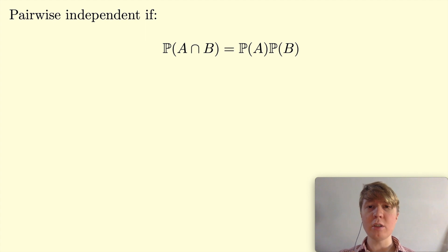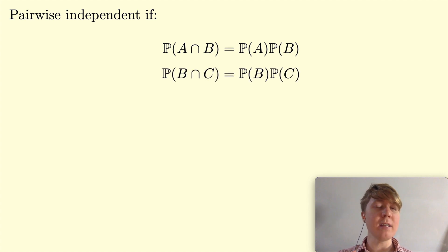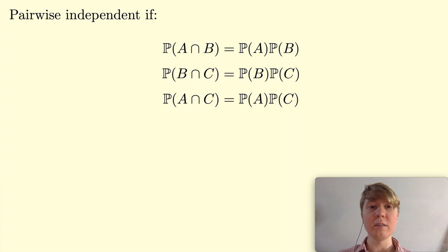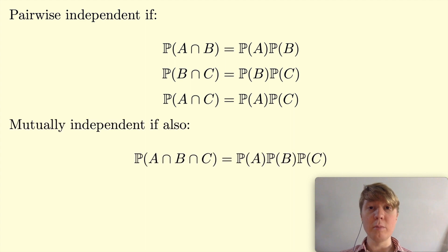If you've got a collection of events — maybe events A, B and C — they're pairwise independent if each pair are independent. So A and B are independent, B and C are independent, and A and C are also independent. A slightly stronger condition is mutual independence: the probability of all three happening equals the product of the three individual probabilities. More generally, a collection of events is mutually independent if for any subset of events, that subset behaves independently.